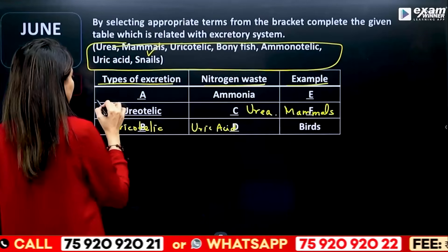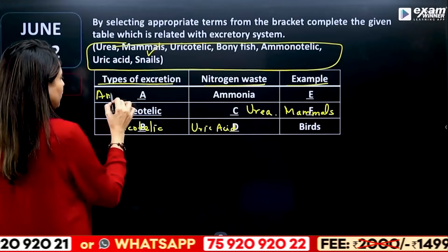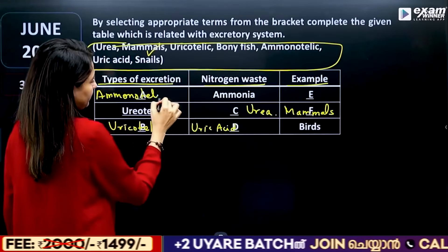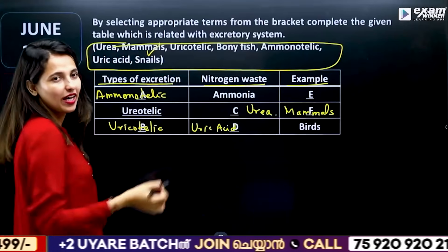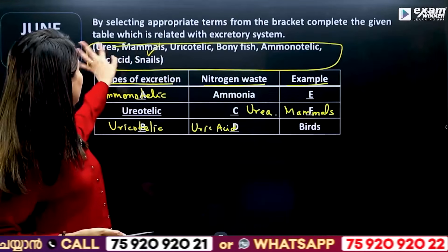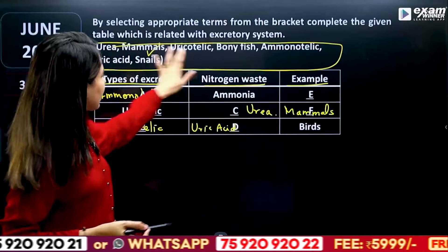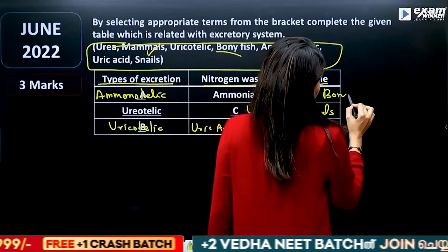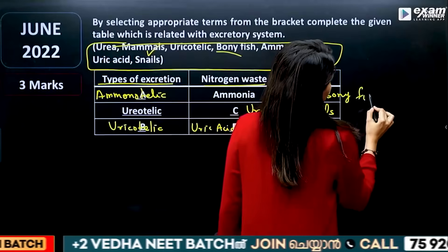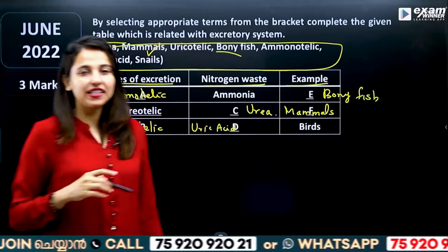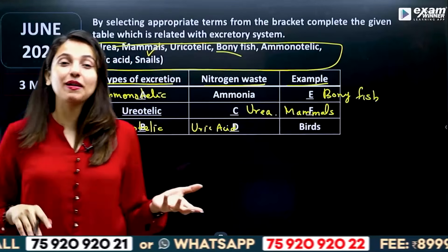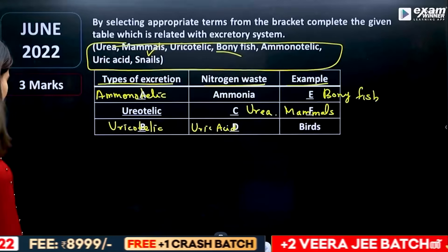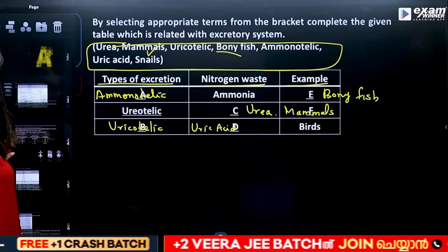We want to select ammonotelic. Ammonotelic — for example, ammonotelic organisms include bony fish. This is an important type of excretion. What kind of excretory product or excretory basis will come under this category?